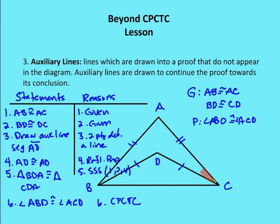We're given that AB is congruent to AC, and that BD is congruent to DC. We want to prove that angle ABD is congruent to angle ACD. To do this, we need to draw an auxiliary line — a line not originally part of the diagram — from A to D. In the proof, we first state AB ≅ AC (given), then BD ≅ DC (given).